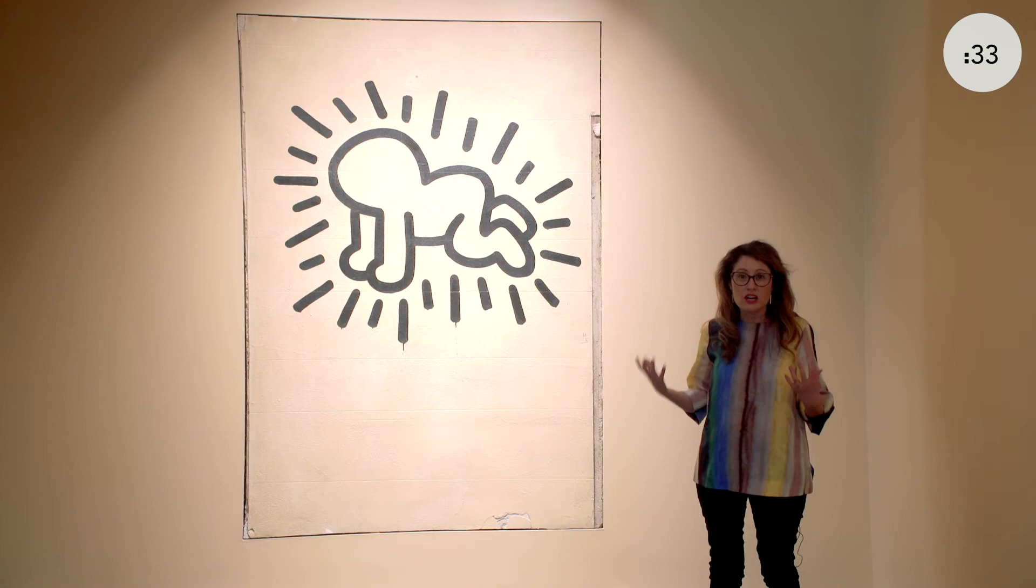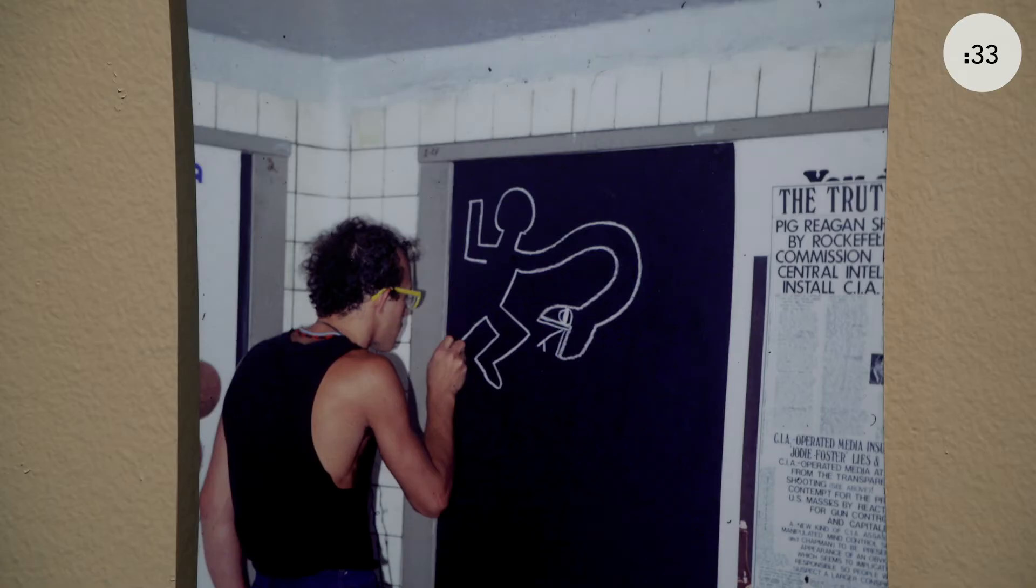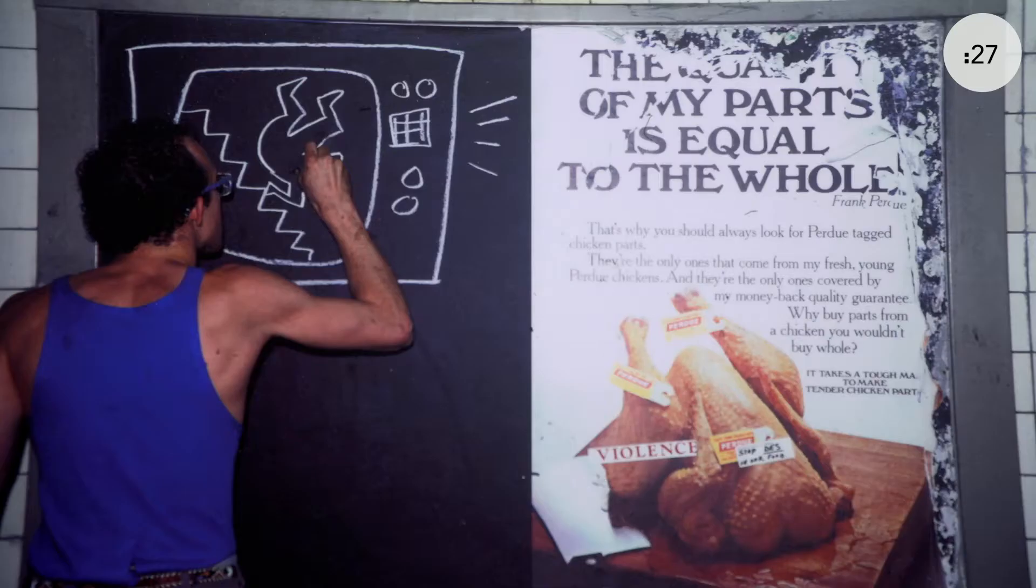For example, he would create chalk drawings in the New York subways or tags on New York walls, and sometimes the Radiant Baby would stand in for his signature. In other words, the Radiant Baby was in some ways Keith Haring articulating his own identity.